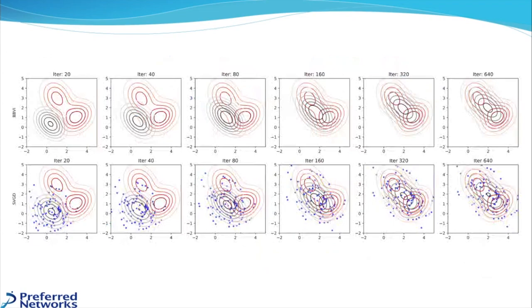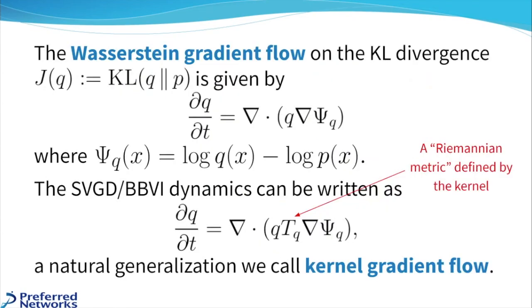So what's actually going on here kind of under the hood? Well, it turns out that these SVGD BBVI dynamics that we've derived is actually a natural generalization of something called Wasserstein gradient flow. And we're calling this natural generalization kernel gradient flow.